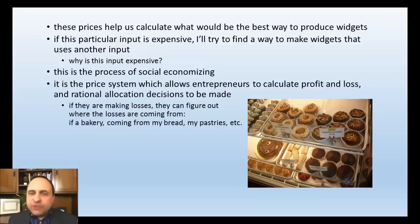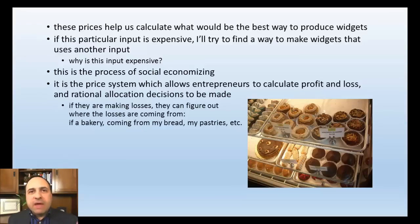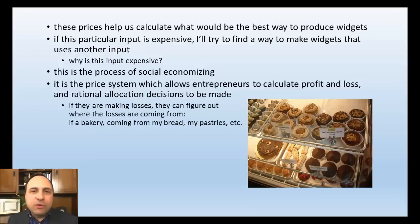It's the price system that allows entrepreneurs to calculate profit and loss and make rational allocation decisions — decisions about how much of this input is needed, how much of that, how much labor and what types. If a bakery is making losses on bread but doing well on pastries, the entrepreneur can figure that out and scale back bread production while expanding pastries. Without comparing revenues from different goods against the cost of inputs, there would be no way of knowing.